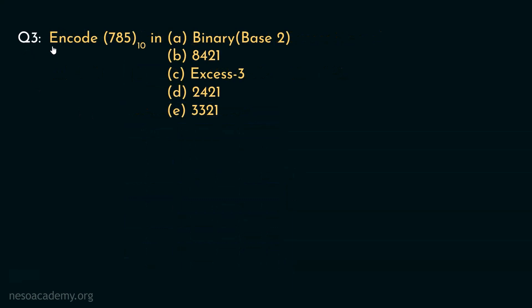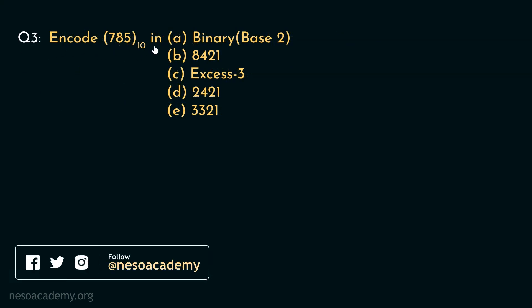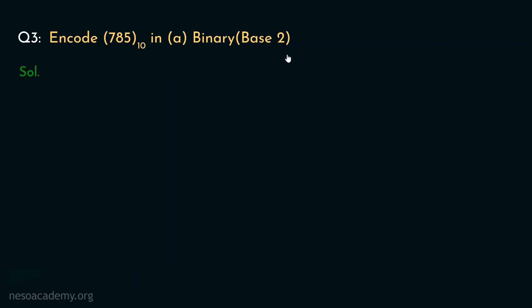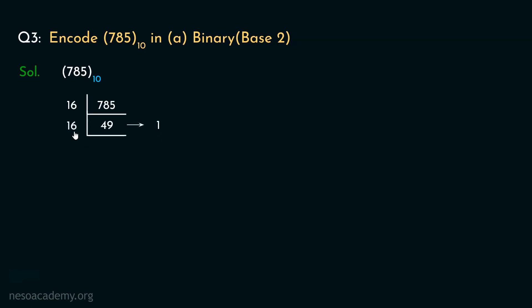Let's now move on to the next question: encode the decimal value 785 first in binary (base 2), then in 8421, in XS3, in 2421, and in 3321. Let's begin with the binary conversion. Instead of performing factorization with 2, we can ease it up by starting factorization through 16. Now 16 times 49 is 784, so that will give us 1 as remainder. If we divide 49 by 16 once again, 16 times 3 is 48, so this will give us 1 as remainder once again. Finally, dividing 3 by 16 will give 0 as quotient and the remainder will be 3.